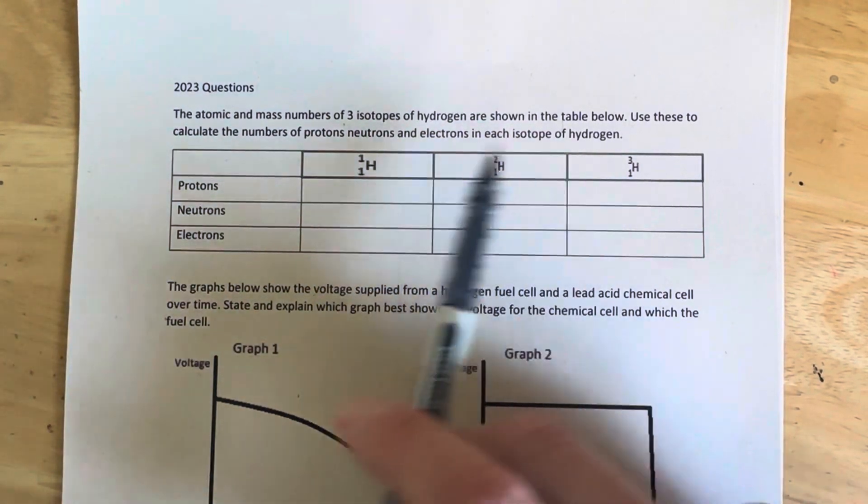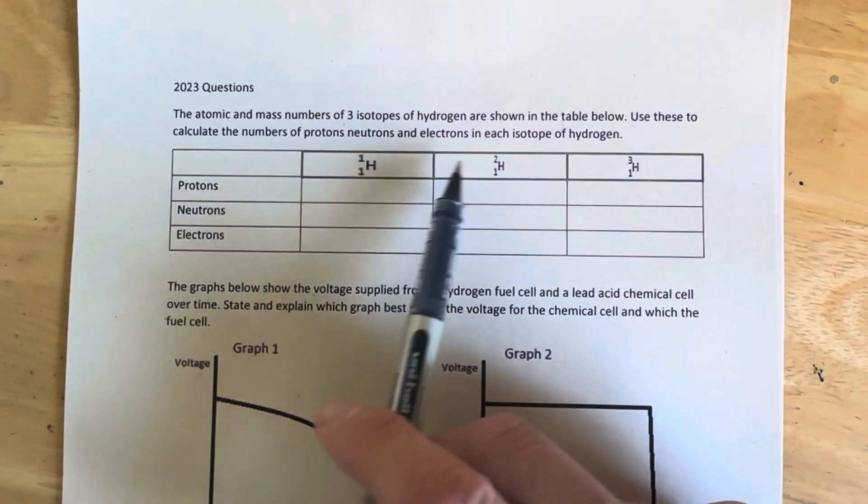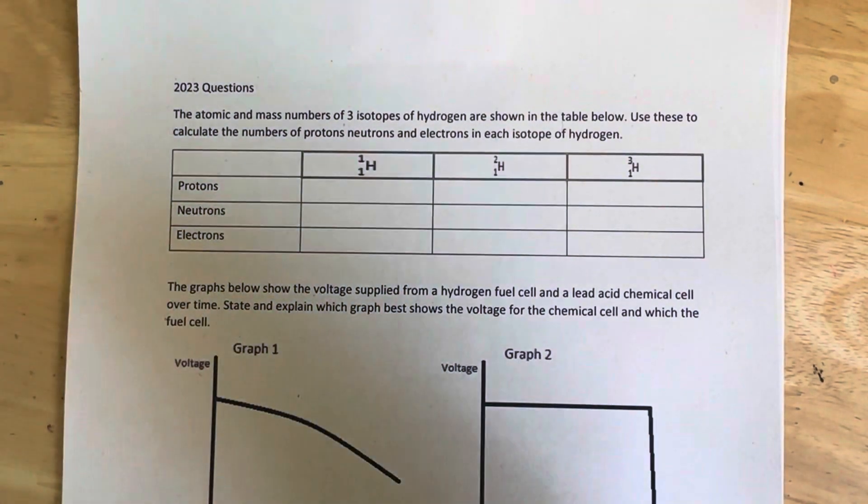So I've got three atoms of hydrogen here. They're all different because the mass number is different. One in that one, two in that one, three in that one. And that's what an isotope is.